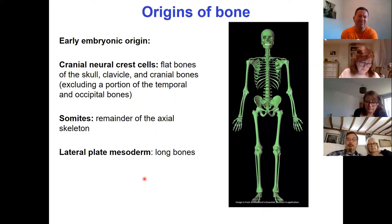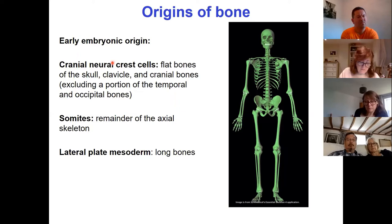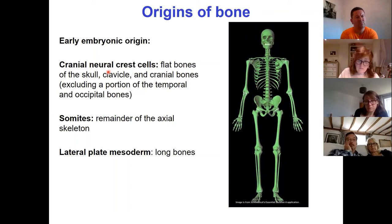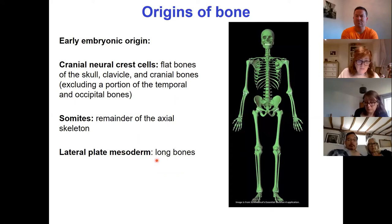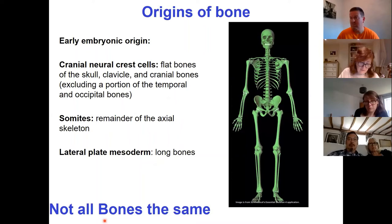Moving to the origins of bones in embryonic development — it's not as simple as axial versus appendicular skeleton. We can trace three embryonic lineages. The first comes from cranial neural crest cells, giving rise mainly to the flat bones of the skull and clavicle and cranial bones — though not all of them; the temporal and occipital bones come from elsewhere. The somite gives rise to the rest of the axial skeleton, and the lateral plate mesoderm gives rise to the long bones of the appendicular skeleton. Even our bones have multiple origins within the embryo, and not all bones are the same.